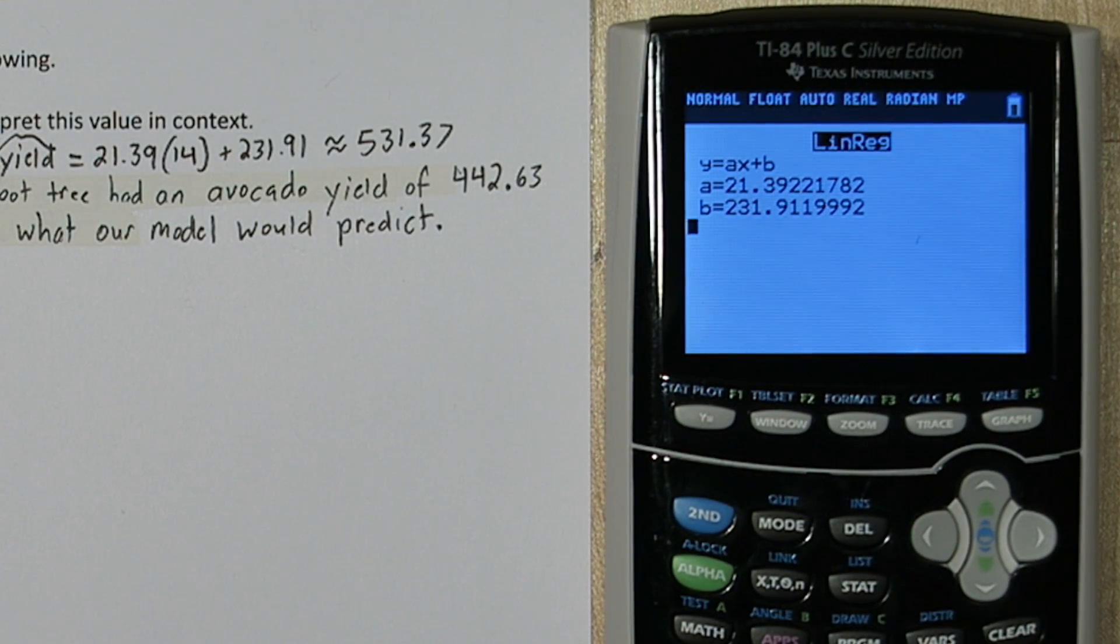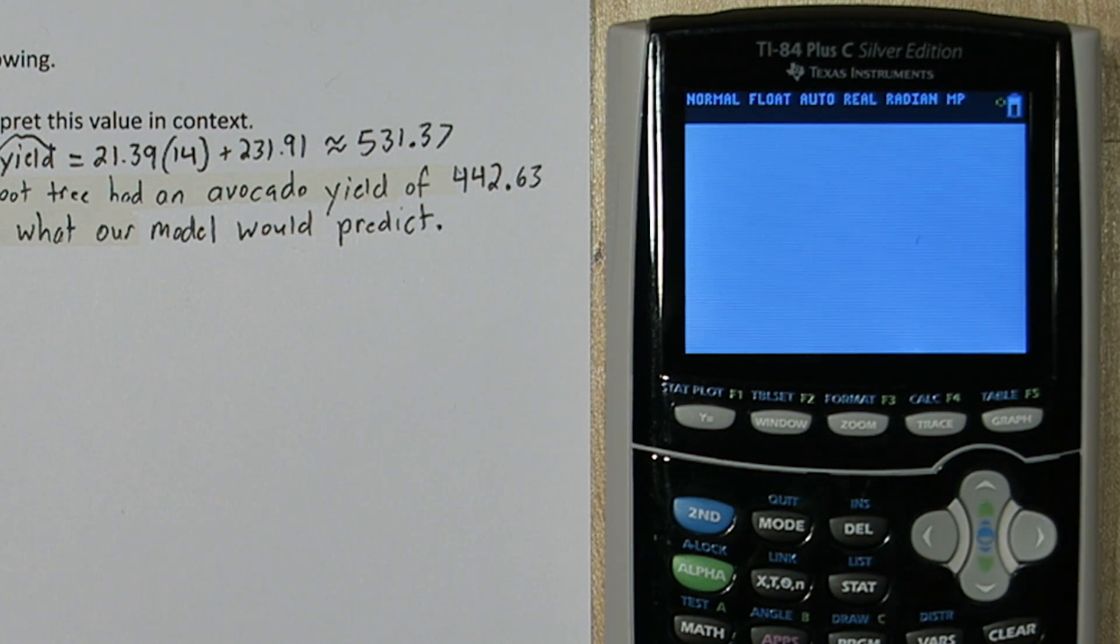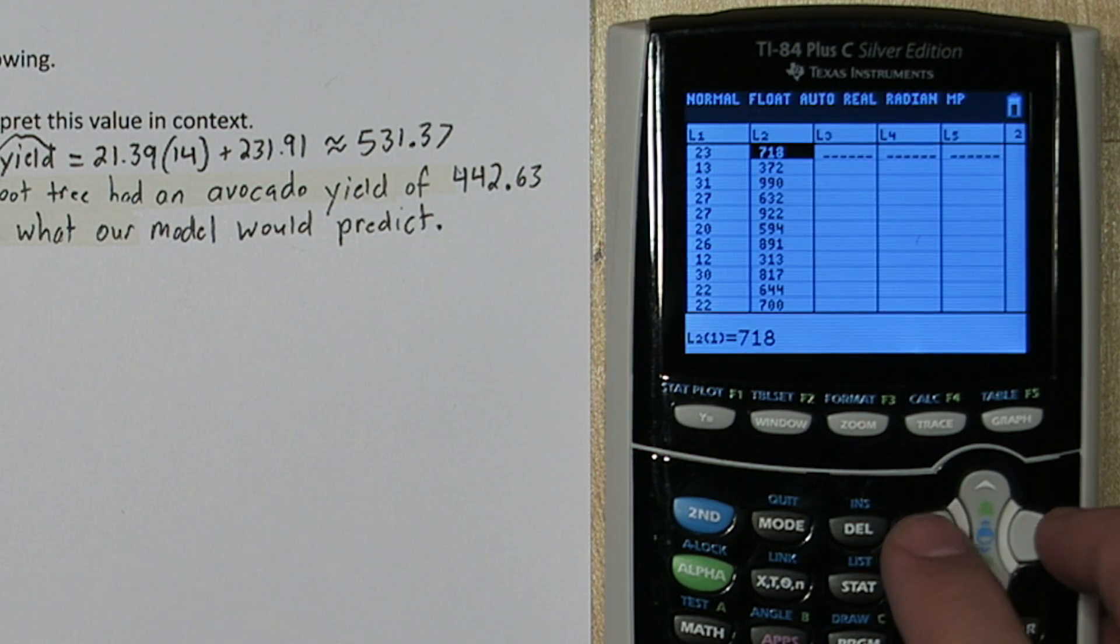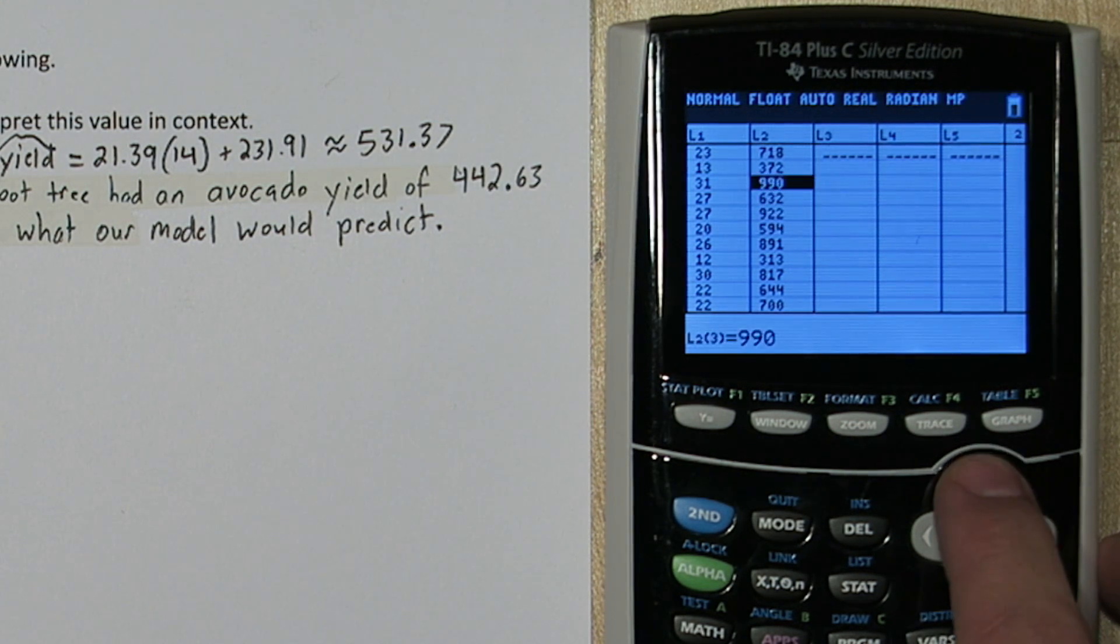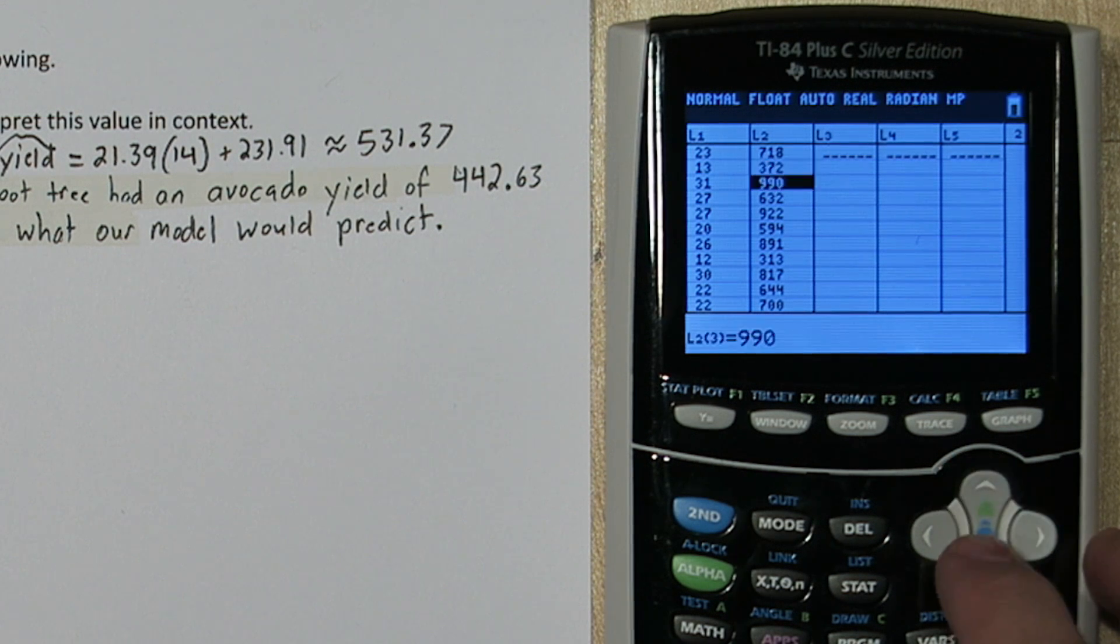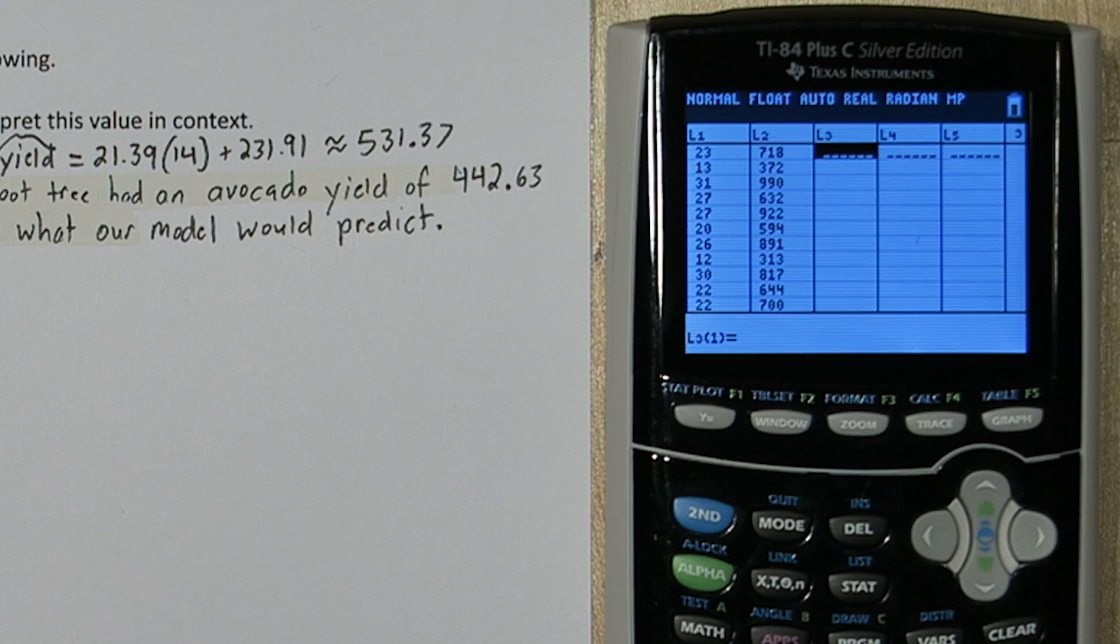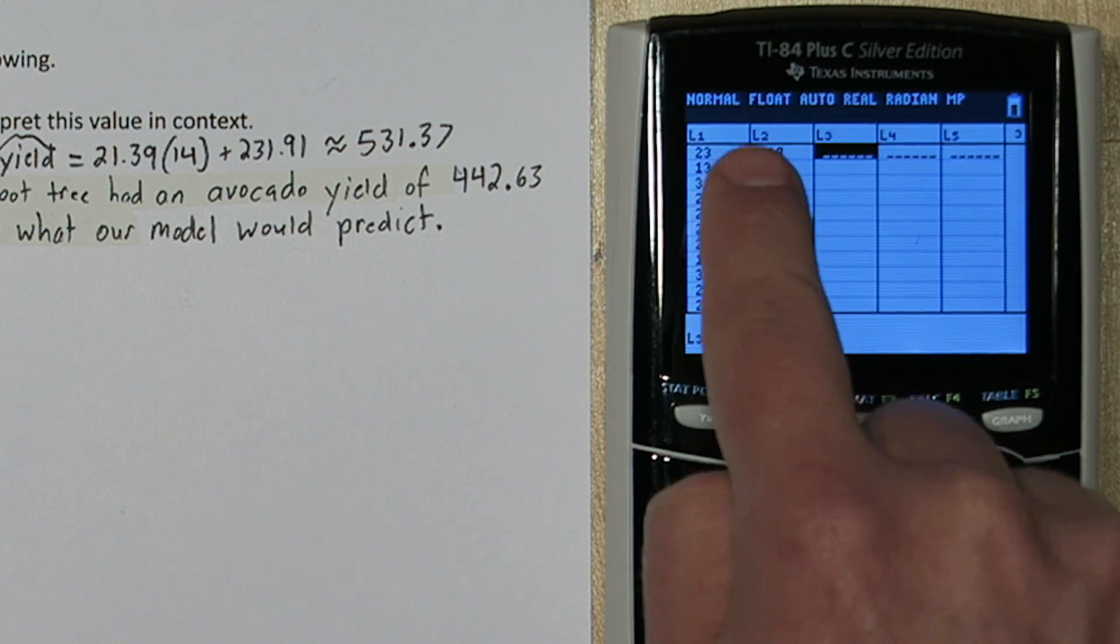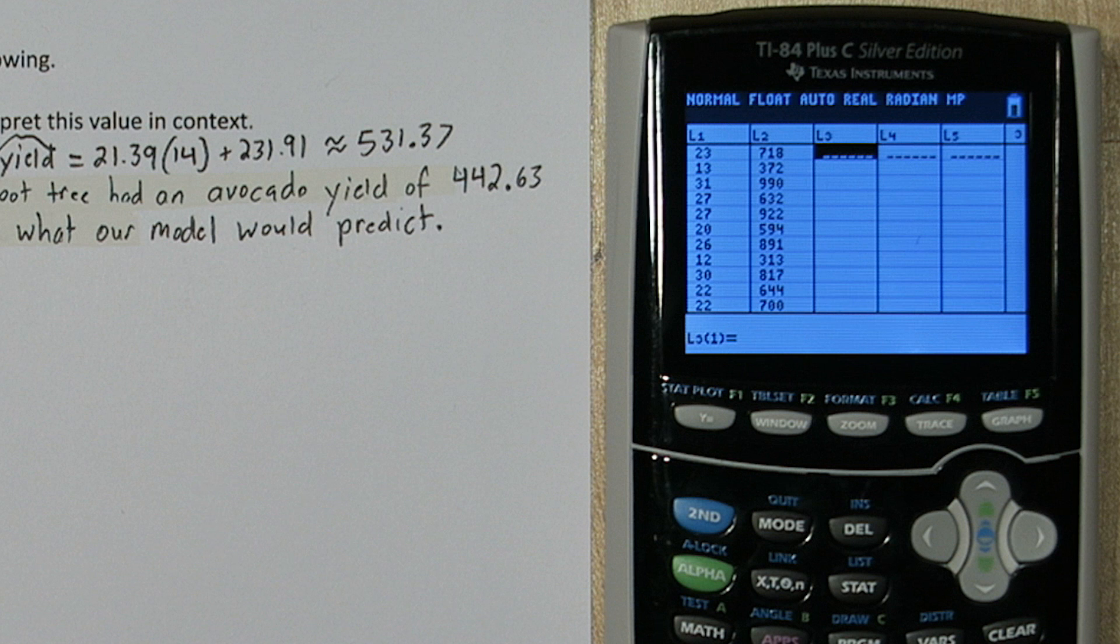Now we're going to calculate a residual plot. So to do this, press the stat button and then enter on edit. Now in list 1 is all of our tree heights and in list 2 is the yields we saw for each of those tree heights. These are the actual observed values. So in list 3, we want the expected values. So for each tree height in list 1, what would our equation predict the yield would be? That's what we want in list 3.